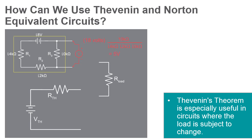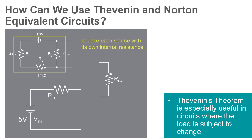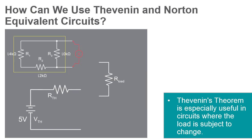There are other analysis methods that can be used to determine voltage across and current through the load resistor, but these methods can be time consuming and would have to be repeated every time the load resistance was changed, which is something very common in power systems.